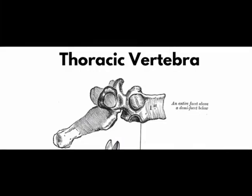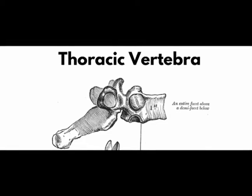In T1, the superior costal facets are whole costal facets. They alone articulate with the first rib, since C7 has no costal facets. T1 does have a typical inferior demifacet for articulation with the second rib.